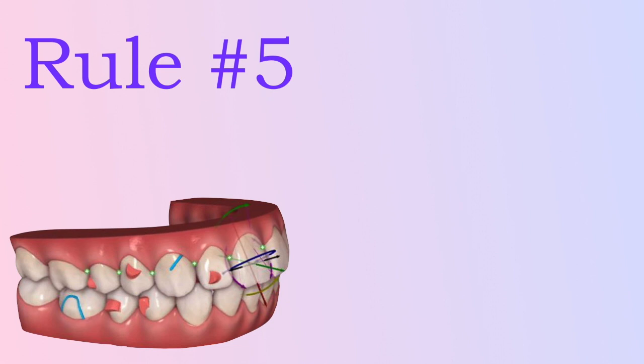For example, extruding an upper lateral incisor is very hard because as the aligner moves down, it doesn't find any concave surface to push onto.